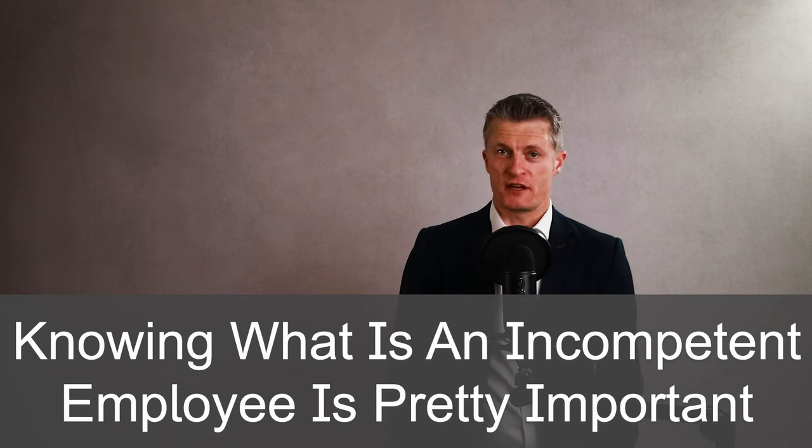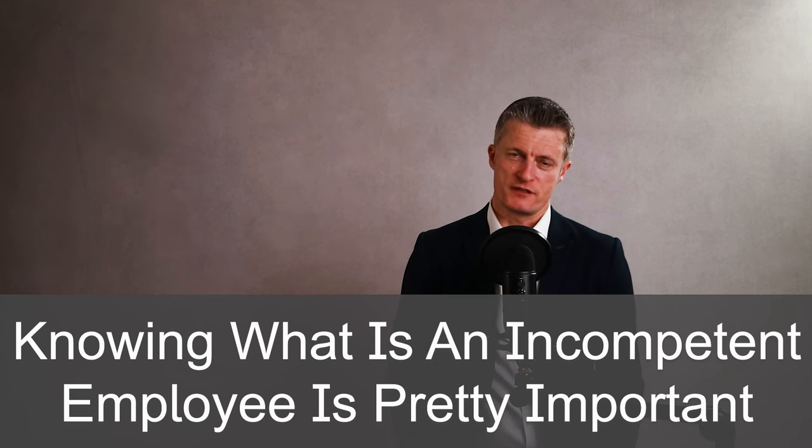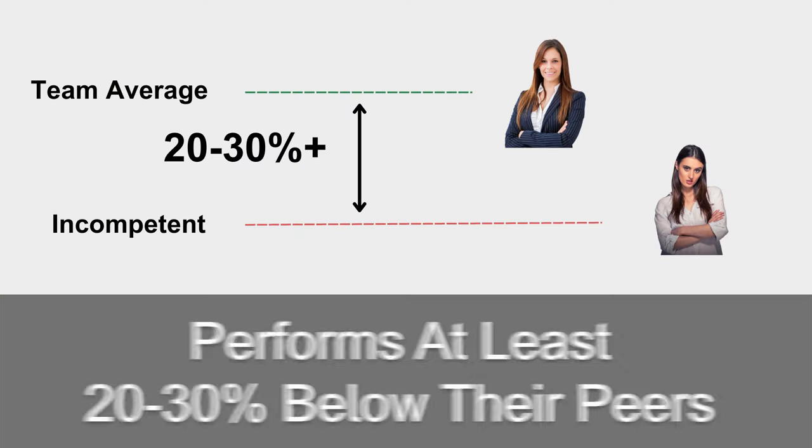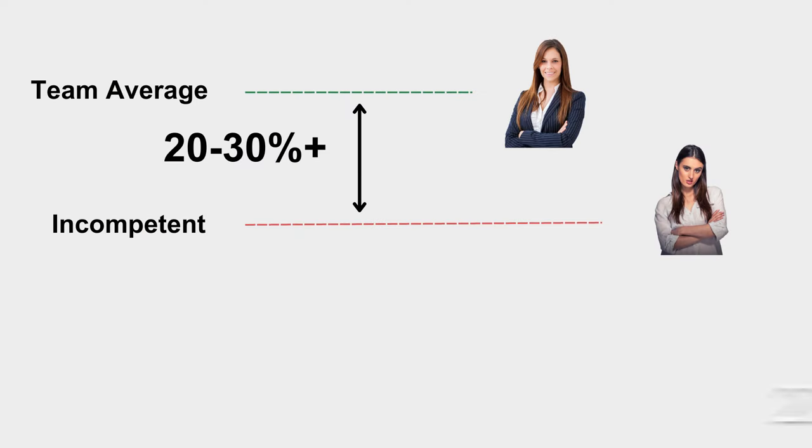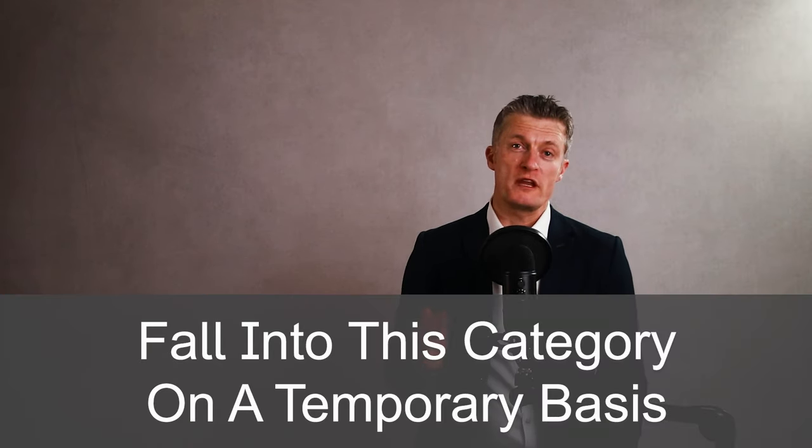Before we dive into these four steps, knowing what is an incompetent employee is pretty important. In my view, an incompetent team member is a person that performs at least 20-30% below the average of their peers doing the same or similar jobs — there is a really noticeable gap in performance levels. There are lots of employees that fall into this category on a temporary basis for all sorts of reasons. Temporary is not incompetence, and usually much easier to fix.